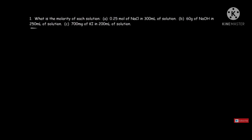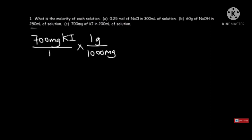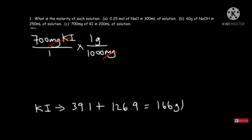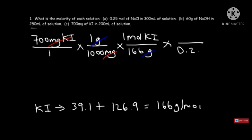For Part C: 700 milligrams of potassium iodide (KI) dissolved in 200 mL. Convert 700 mg to grams: 0.7 g. Find the molar mass of KI: potassium 39.1 + iodide 126.9 = 166 g/mol. Convert 200 mL to 0.2 L. Molarity = (0.7 ÷ 166) ÷ 0.2 = 0.0211 M.